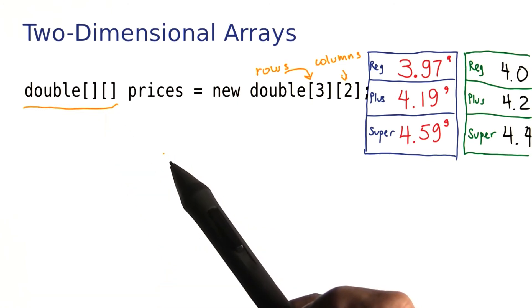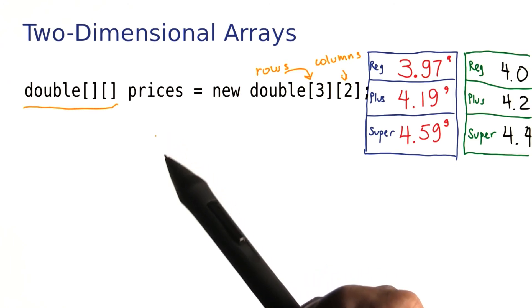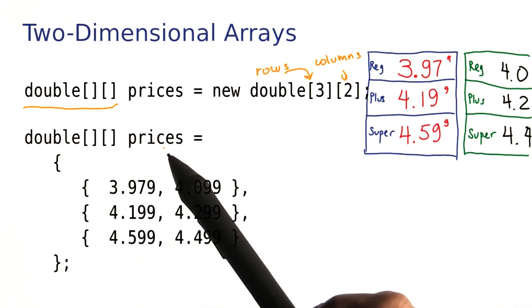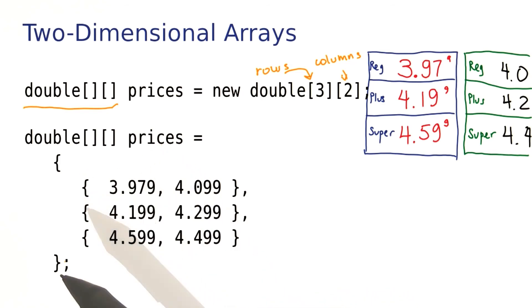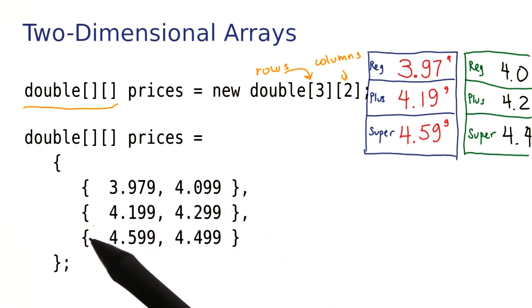If you already know which numbers should go into the two-dimensional array, then you can supply them like this. Again, here I have a two-dimensional array of prices, and now you put a pair of braces for the entire array. And then for each row, you put another pair of braces with the values. So here we have three rows, each of which is enclosed in a pair of braces.